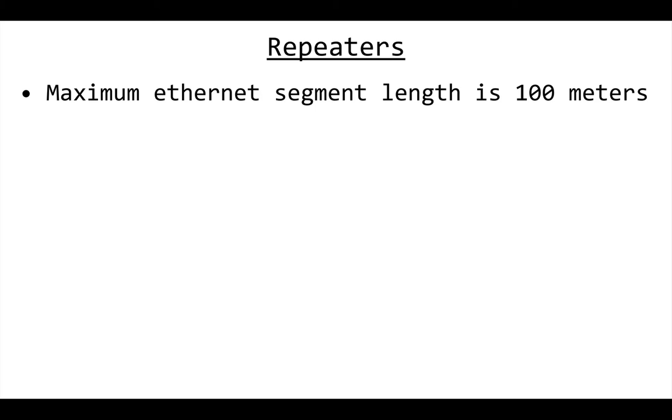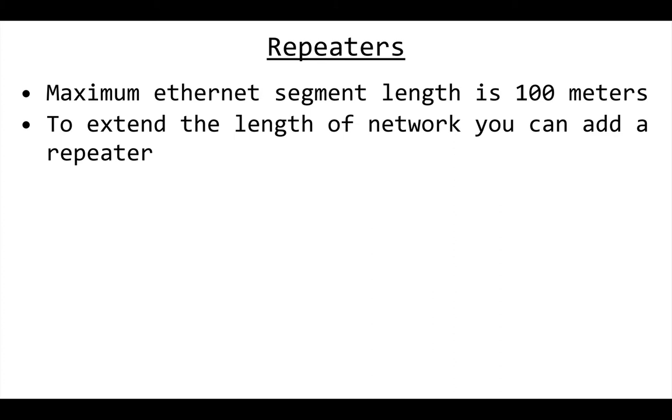Basically, the reason we have repeaters is because the maximum segment of a network, if we're talking about Ethernet, is 100 meters, a little bit over 300 feet. The problem is, what if you need a connection longer than 100 meters? You extend the length of the network by adding a repeater.